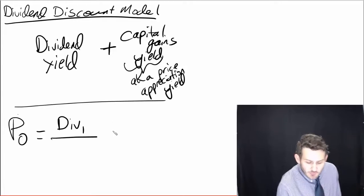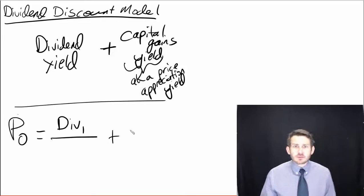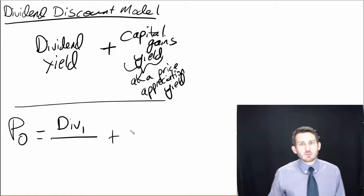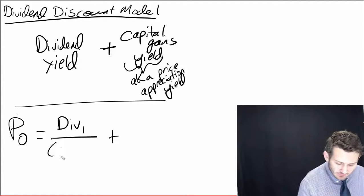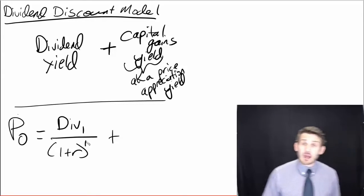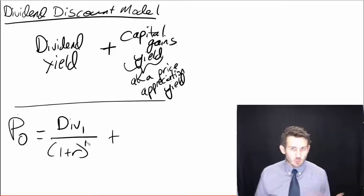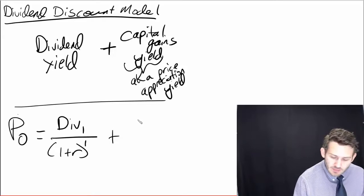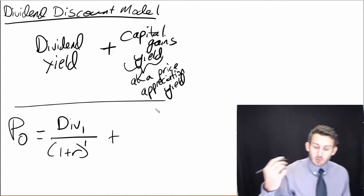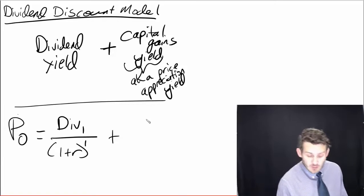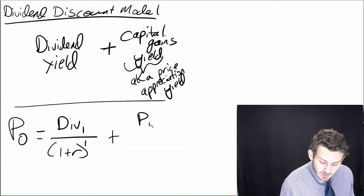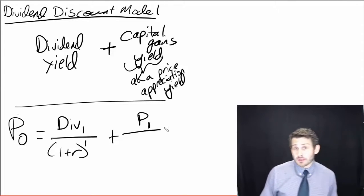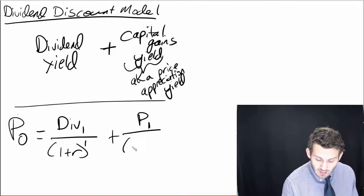And then the other thing, the central component of finance, is that we have to discount everything - our time value of money. So we still have to discount this, and it's going to be one plus R to the first power, because it's one year from now, one time period. So the next thing we're looking at is our capital gains yield. So our price tomorrow is basically P one, P sub one, that's the price tomorrow. And then we're going to discount that back as well.